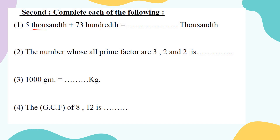Next: 5 thousands plus 73 hundreds equals how many thousands? The answer must be in thousands, so convert everything. 5000 stays as is. To convert 73 hundreds into thousands: 100 equals one-tenth of a thousand, so 73 hundreds equals 7,300. Wait — 73 hundreds is 7,300. So 7,300 plus 5,000 equals... the answer is 7,735,000.